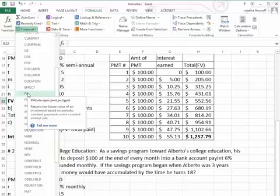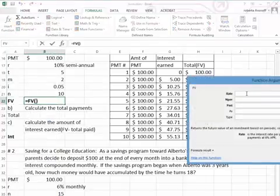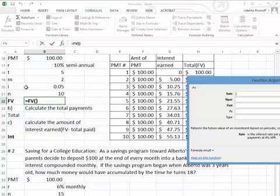And notice we get returns the future value of an investment based on periodic constant payments and a constant interest rate. The first window says rate, and that is our periodic interest rate, or the .05. The NPER is the total number of payments. That's our N, which is 10.